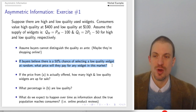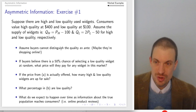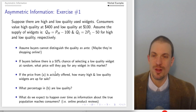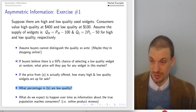If buyers believe there's a 50% chance of selecting a low-quality widget at random, what price will they pay for any widget in this market? This gives us a distribution of good and bad widgets that allows us to determine the expected valuation. If the price from part A is offered, how many high and low quality widgets are up for sale — we need to use our supply functions to determine that. Then we determine what percentage are actually low quality.